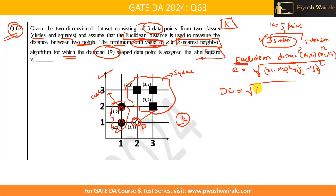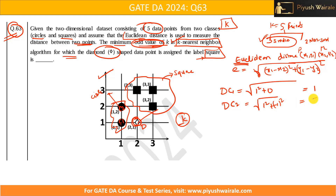Distance D to C2 = sqrt((2-1)² + (1-2)²) = sqrt(1 + 1) = sqrt(2) ≈ 1.41. Distance D to S1 = sqrt((2-2)² + (1-3)²) = sqrt(0 + 4) = 2.